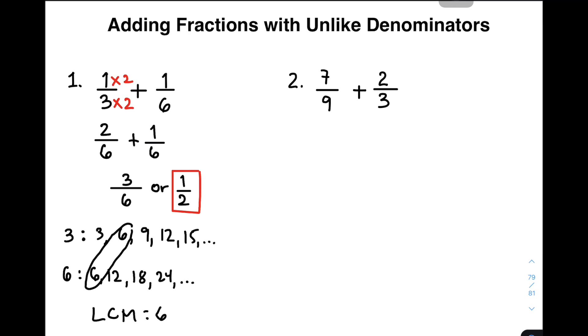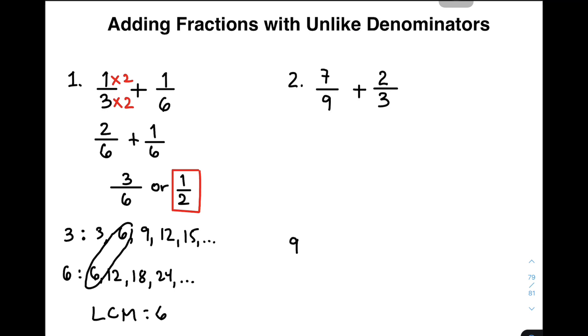Same process with number 1. We need to find first the least common multiples of 9 and 3 using the listing method. The multiples of 9 are 9, 18, 27, and so on. And as for the second number, which is 3, that is 3, 6, 9, 12, and so on. I will stop here because I noticed that their least common multiple is 9.